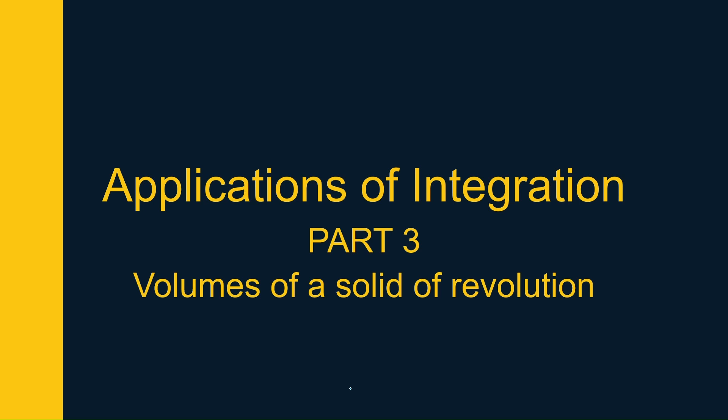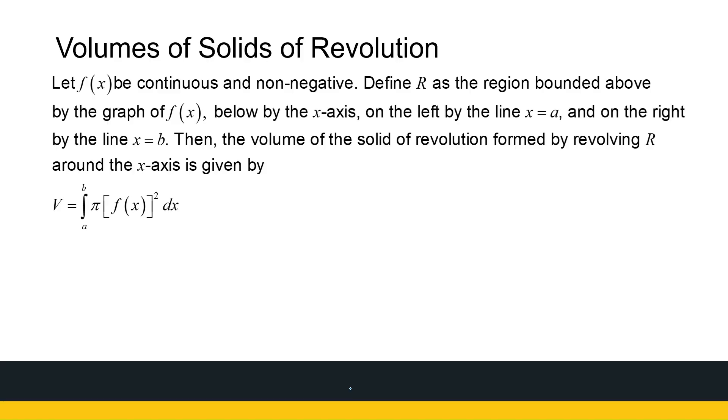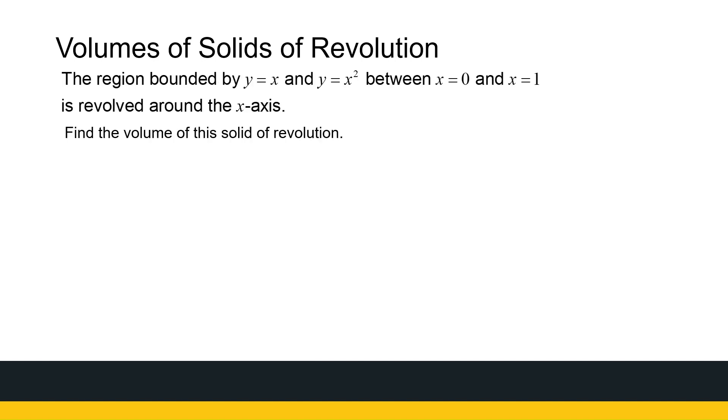We are busy looking at volumes of solids of revolution. We've looked at finding volumes with slicing, and then we found a formula to find the volume of a solid of revolution if a function is rotated about the x-axis. So we're going to take this one step further now. This is the formula we got for rotating a continuous non-negative function about the x-axis. So let's look at this next question and see how we're going to approach this one.